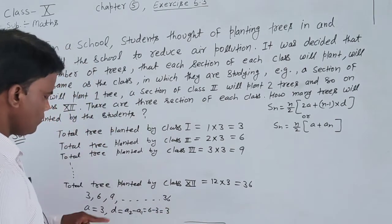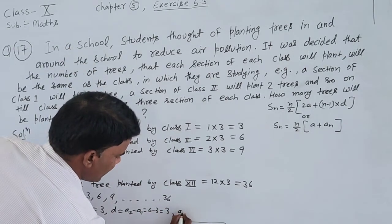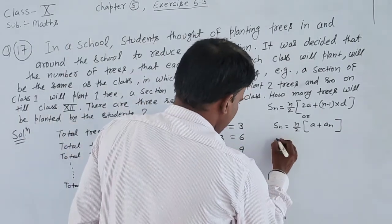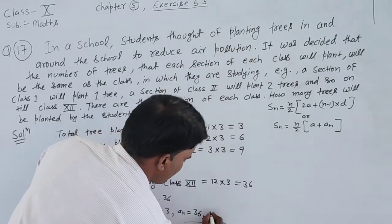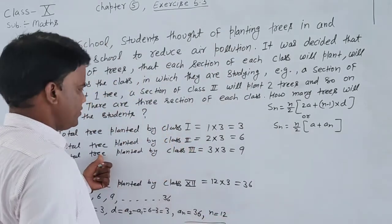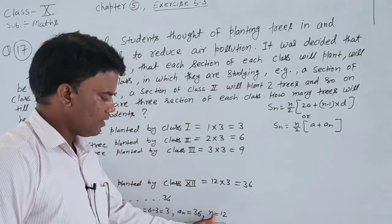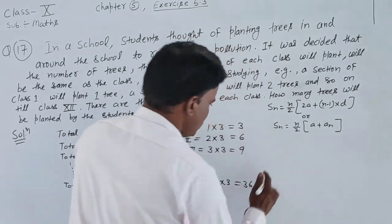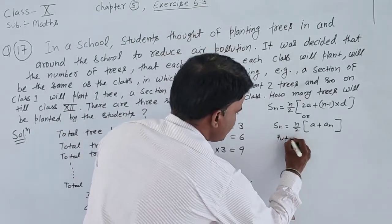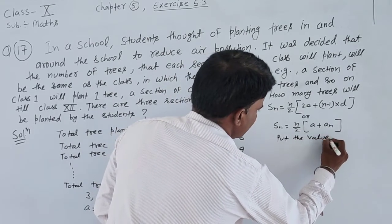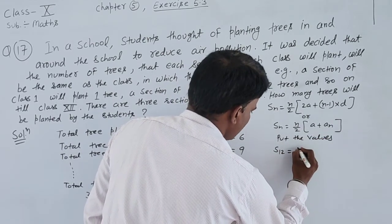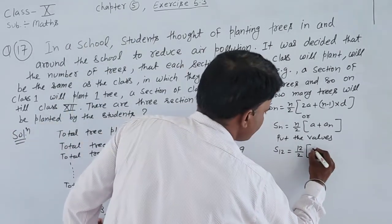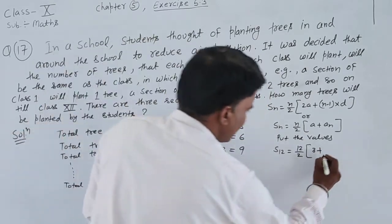The common difference d equals 3, the last term is 36, and the total number of terms n is 12. Now put the values: S_12 equals 12 by 2 times (3 plus 36).